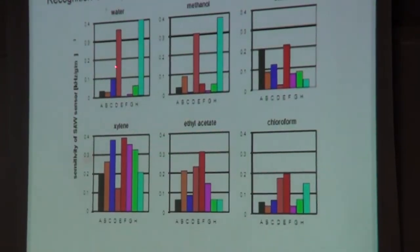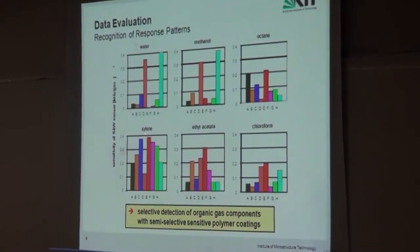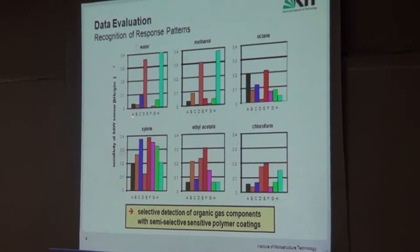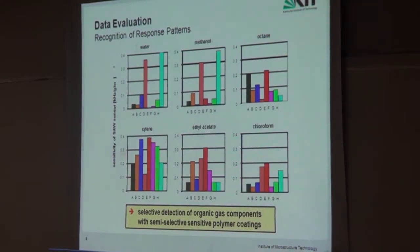Here are more examples, plotting the maximum signal for water, methanol, octane, xylene, ethyl acetate, and chloroform across sensors A through H — short names for our polymer sensors. The same polymers interact completely differently towards each gas. Already by a first glance you see big differences, showing we have something like selective detection using semi-selective polymer coatings.